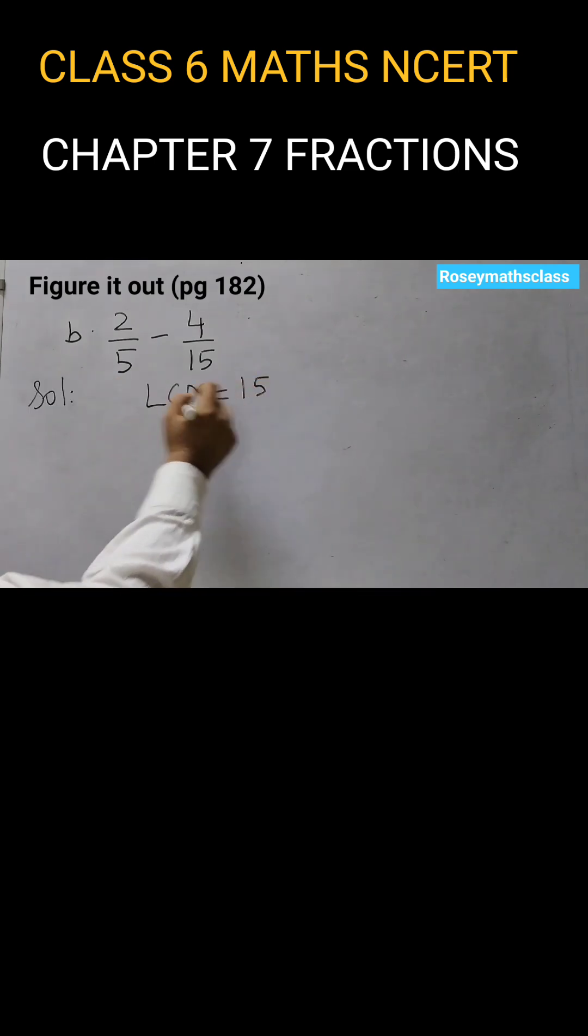Okay. If 15, now 2 upon 5 we will multiply by 3. 2 threes are 6, 5 threes are 15. And this one will remain as it is because we already have 15 in the denominator.